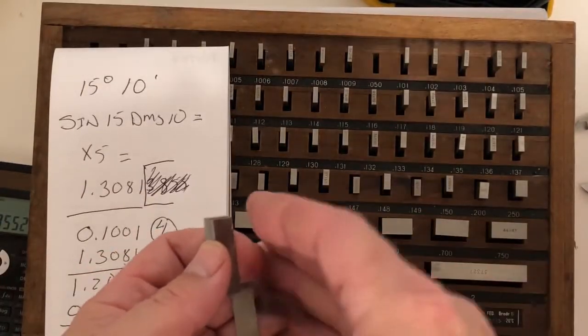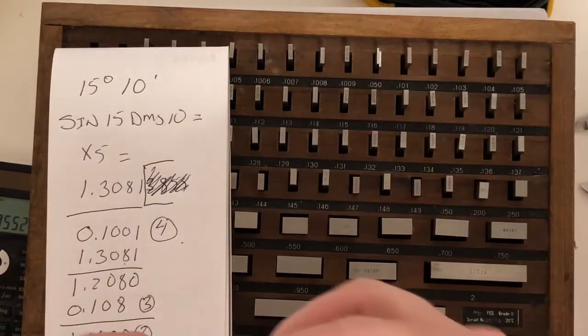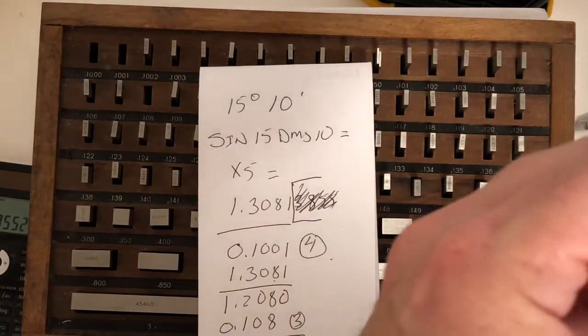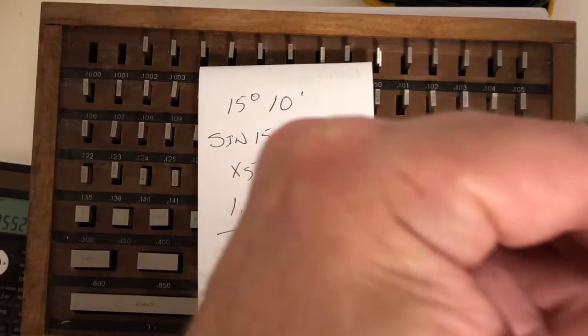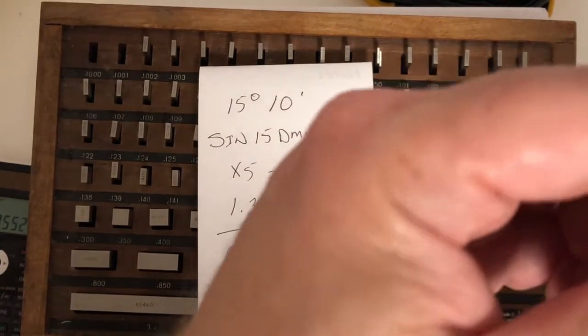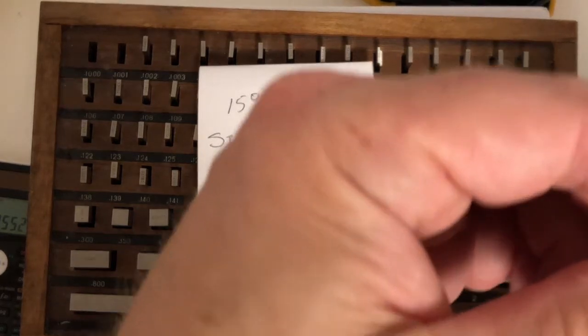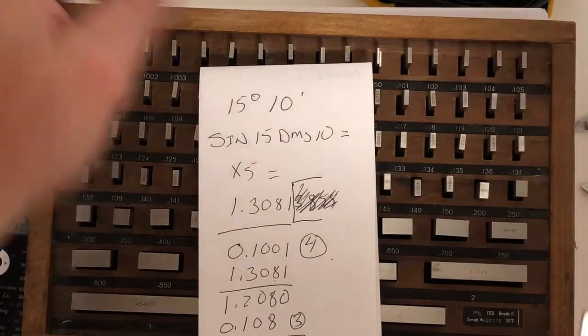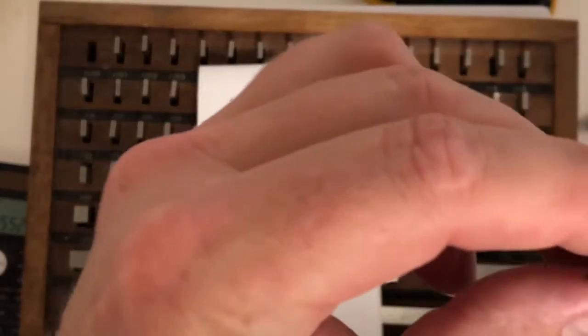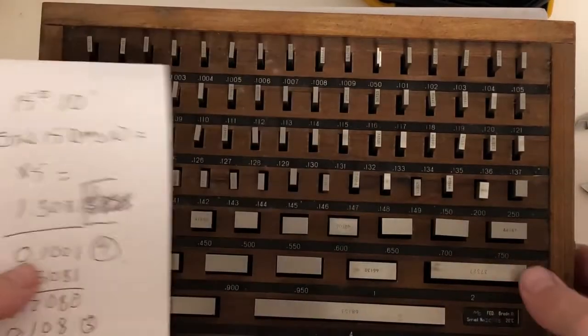So always put your gauge blocks back where you got them from, right away as soon as you're finished using them. I can't stress that enough. This is 108. That guy's 100 thou 1 10th. And this guy here has got to be 100 thou because that's the last block left. That guy's 100 thou. Let's do a couple more of these.